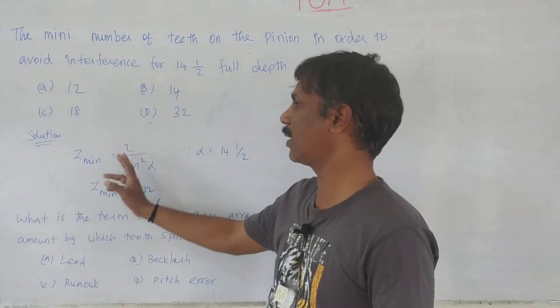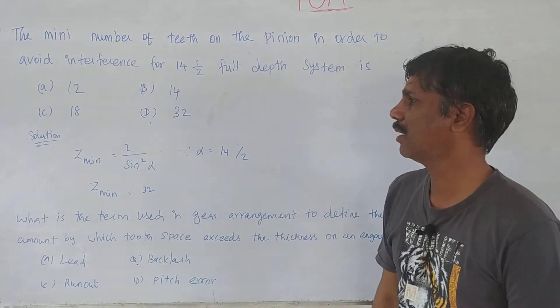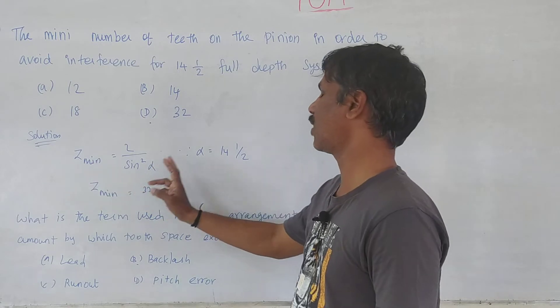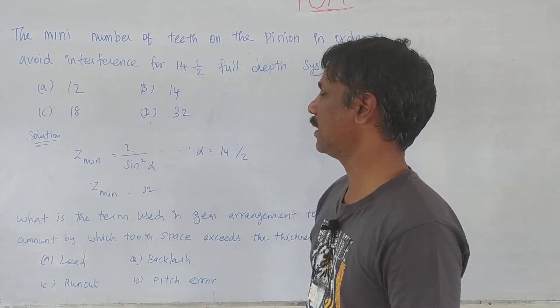The formula is simple: 2 by sin square alpha. Minimum sin square alpha is 32. It is 32.